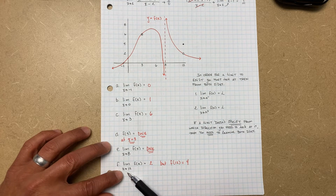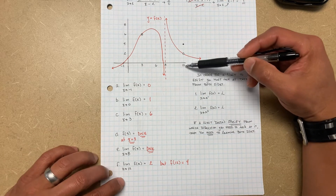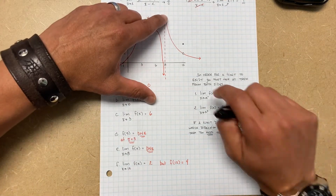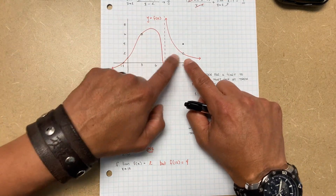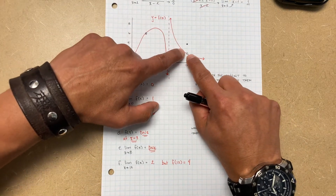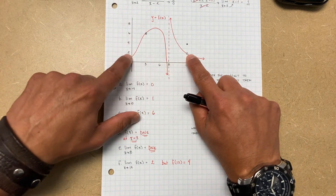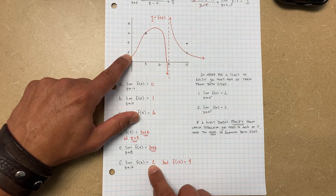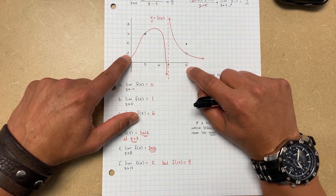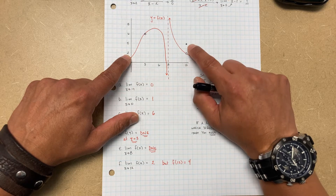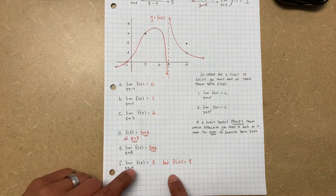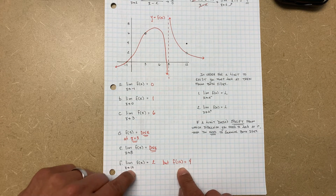What about the limit as X approaches 12 of f(X)? Here's 12 — from the left it approaches a Y value of 2, from the right the same thing. They both approach the same Y value of 2. But if you look at what f(12) actually is, at X equals 12 the value is 4 — different from the limit.